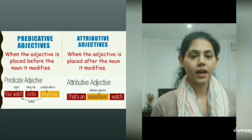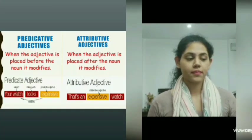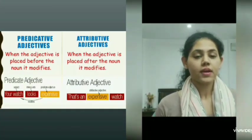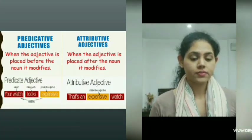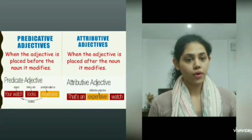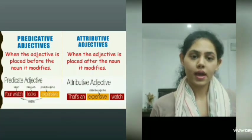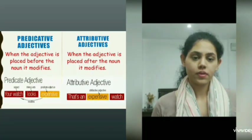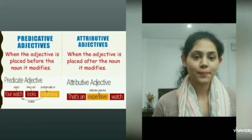The next type is the attributive adjective. When the adjective is placed before the noun it modifies, for example: 'That's an expensive watch.' 'Expensive' being the adjective and 'watch' being the subject.